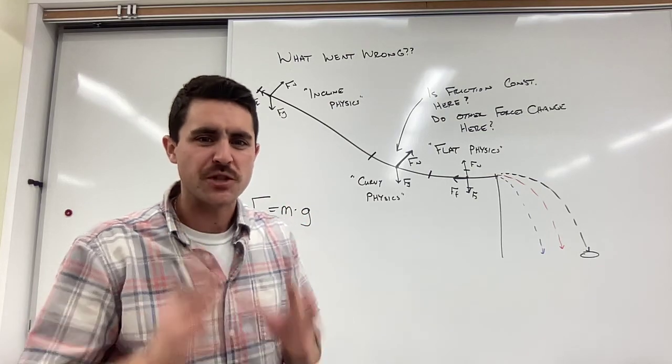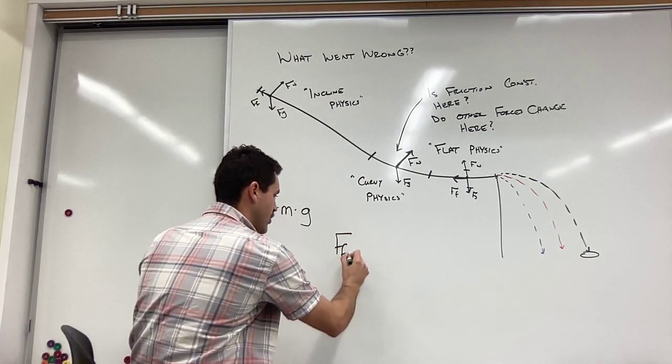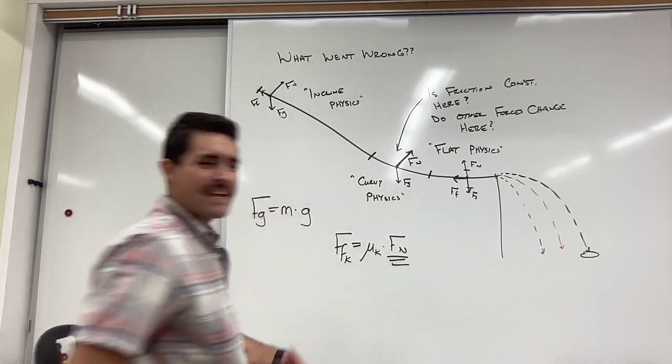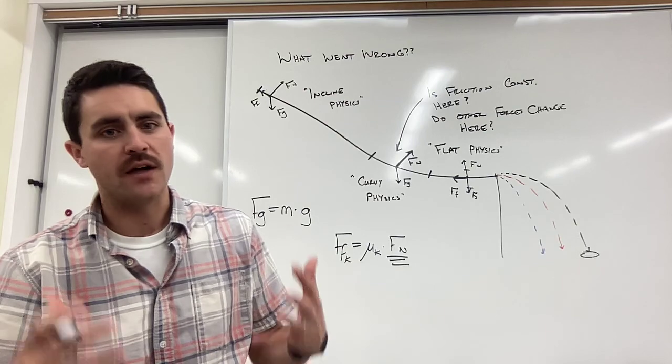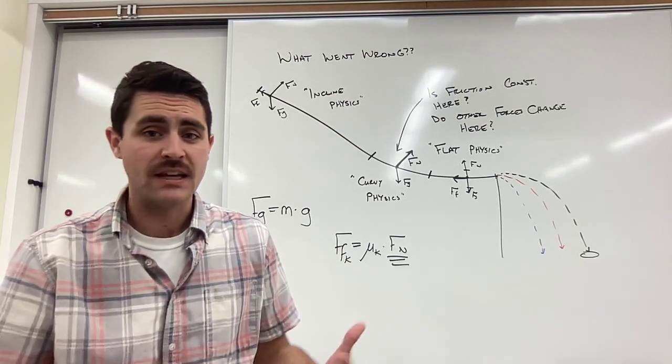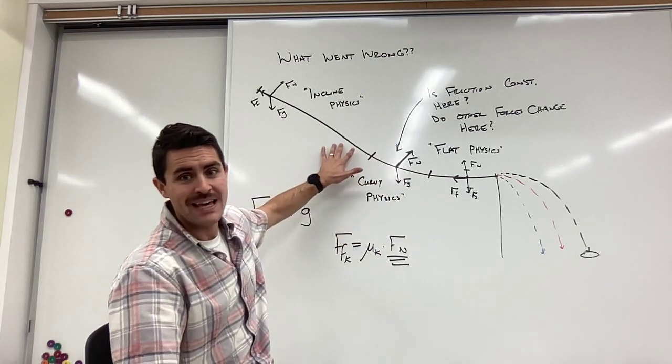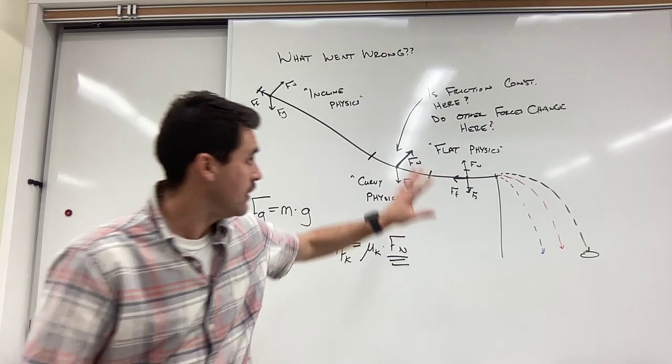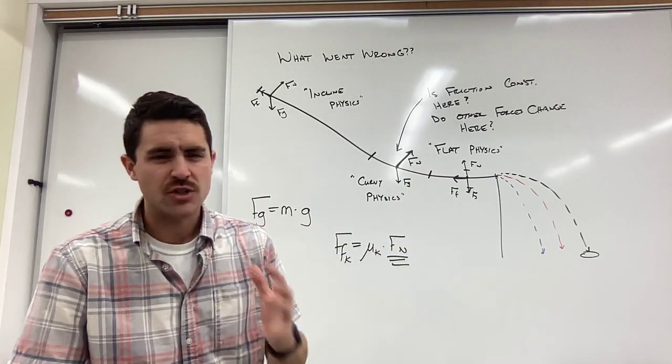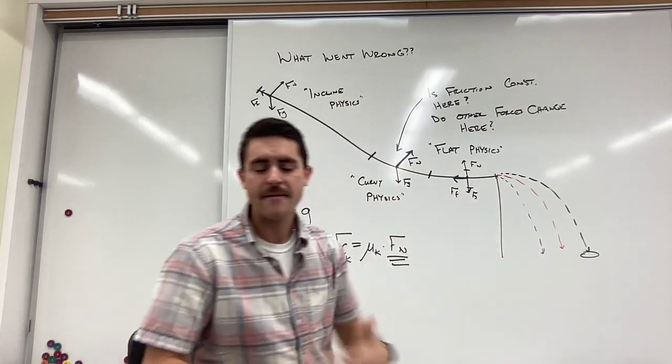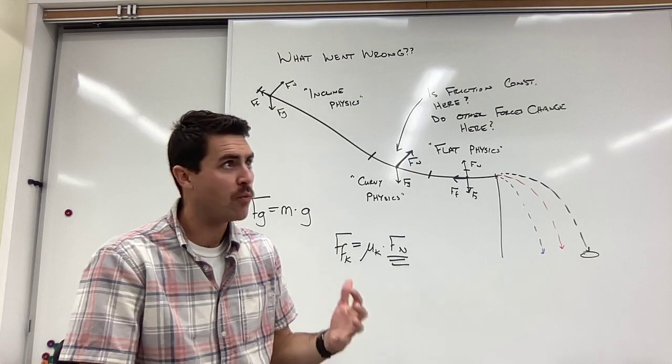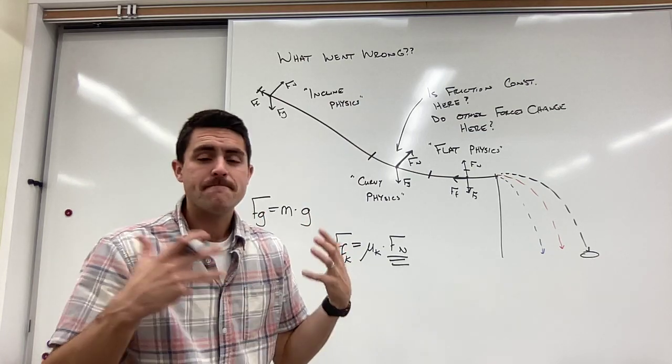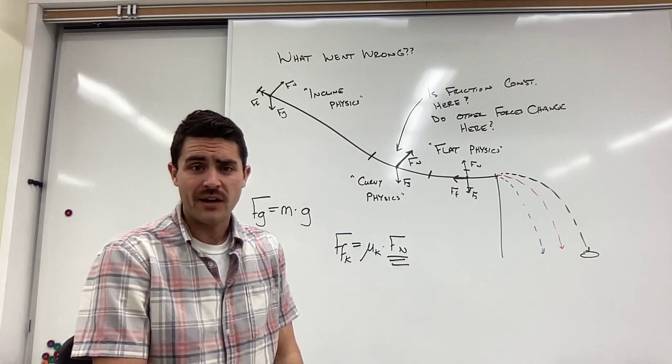This is why this curvy physics throws off all of our measurements. Because normal force is responsible for friction. We know that friction kinetic is equal to the coefficient of friction times the normal force. If that normal force increases, so does friction. If friction increases beyond what it is in the flat physics and in the incline physics, then this curvy section is going to be slowing us down much, much, much more than our flat physics. That should hopefully explain why we see falling short. This upward normal force is responsible for an increase in friction. It's responsible for that feeling and it's responsible for us failing in our incline challenge lab.